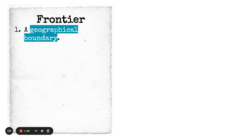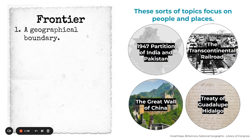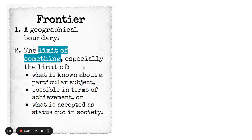Frontier is defined as a geographical boundary. There are lots of examples: the Transcontinental Railroad, the Great Wall of China, the Treaty of Guadalupe Hidalgo, the 1947 partition of India and Pakistan — or the limit of something.